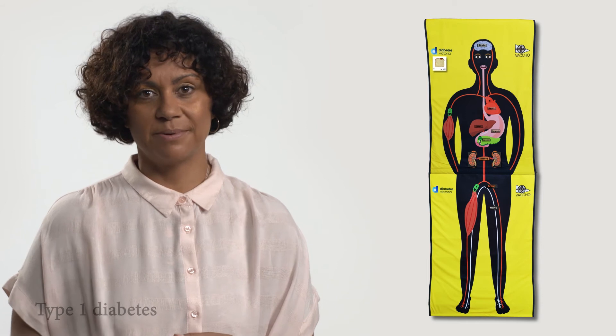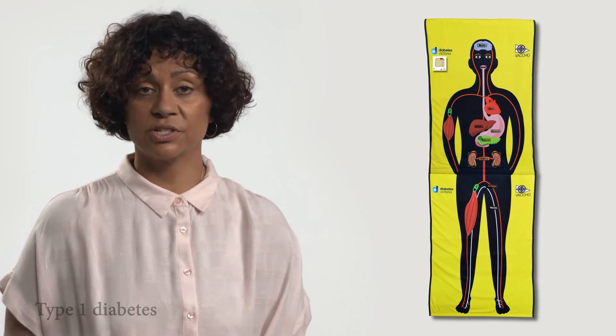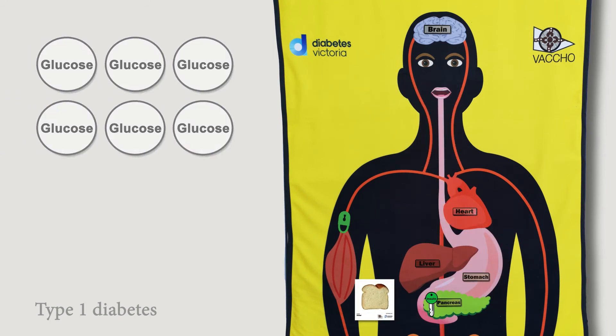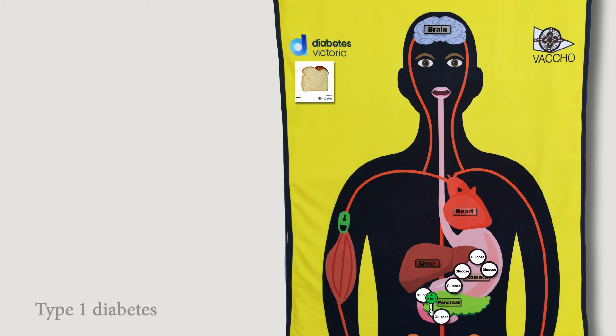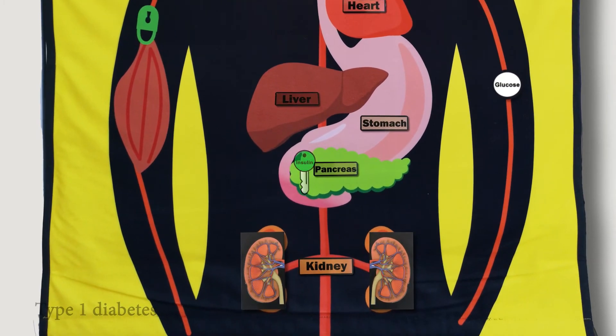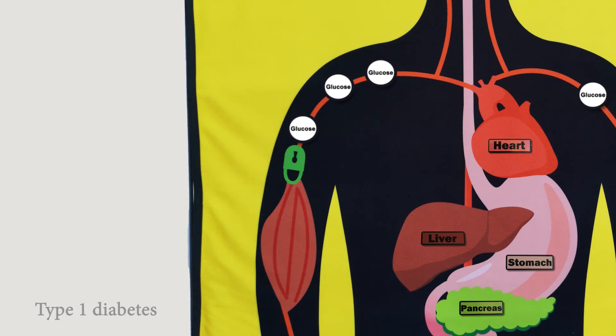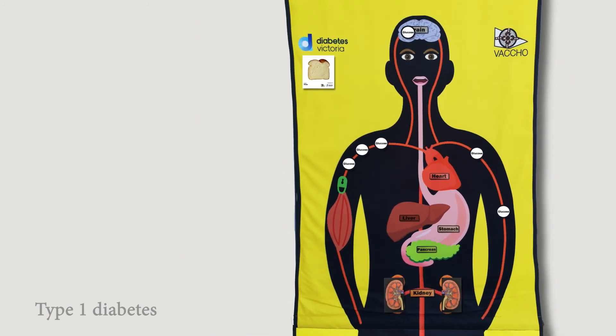Now let's look at what happens to glucose in the body of a person with type 1 diabetes. In type 1 diabetes carbohydrate food is eaten and broken down into glucose just the same as in a person without diabetes. Glucose is absorbed into the bloodstream and travels around the body in the same way too. In type 1 diabetes no insulin is produced so no glucose can get into the muscles for energy. This leads to a buildup of glucose in the blood.